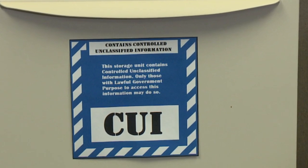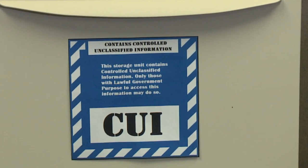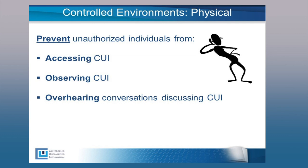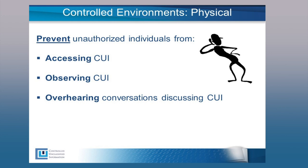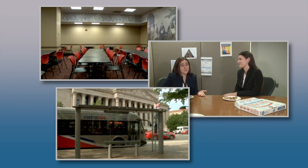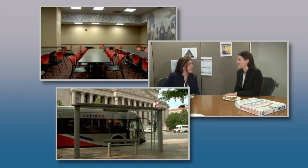But what about for CUI use? What other precautionary measures must an organization take when working with CUI? To guard against unauthorized disclosure, CUI safeguards must not only prevent unauthorized individuals from access, but also prevent them from observing or overhearing discussions that contain CUI. For this reason, common or public areas such as cafeterias, waiting rooms, or public transportation systems are not acceptable for the storage, discussion, or review of CUI. It is important to be aware of your surroundings and ensure that CUI is adequately protected from unauthorized disclosure at all times.